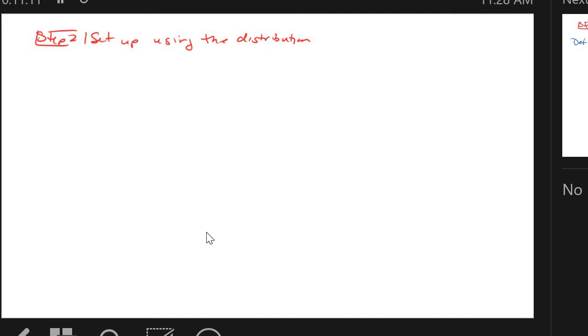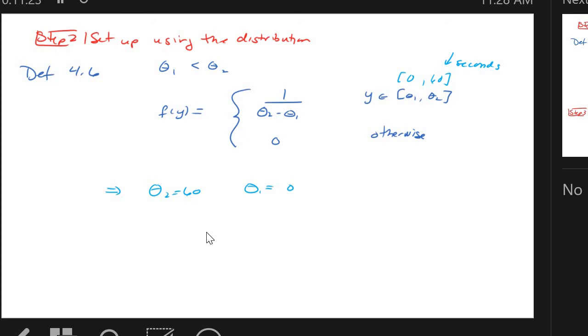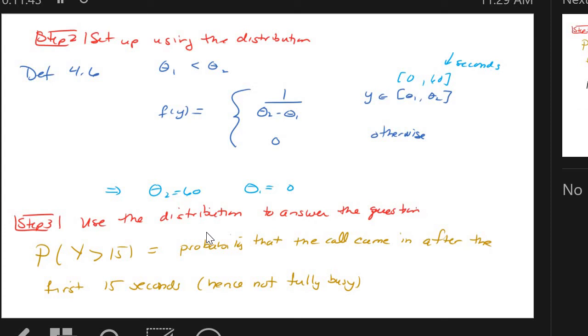Now you want to set up this problem using that uniform distribution. So definition 4.6 says that's the density function. And I use seconds. I was a little bit bothered as a mathematician because it could be any time, so it's any real number. So I should be able to do anything in that 0. But let's say it's seconds, 0 to 60 seconds. Then my theta 2 would be 60 and my theta 1 would be 0. So I know what those things are filled in. And then I use that distribution to answer their question. So this part might be hard.